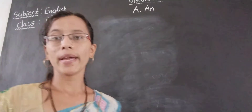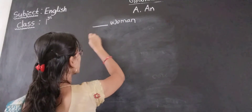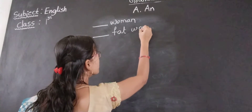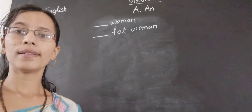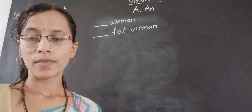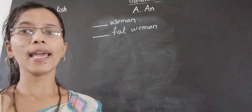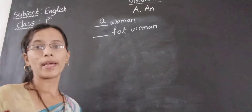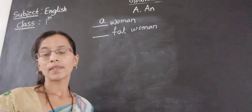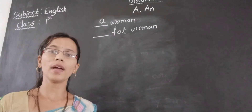One more word: fat woman. So woman — W is there, beginning of W means that is a consonant, we have to use A. A woman. Then fat — the first sound is F, that is a consonant sound. Again, consonant sound, we have to use A.